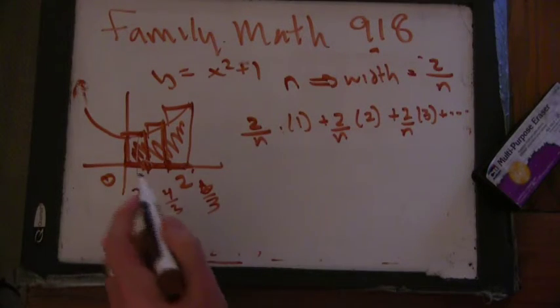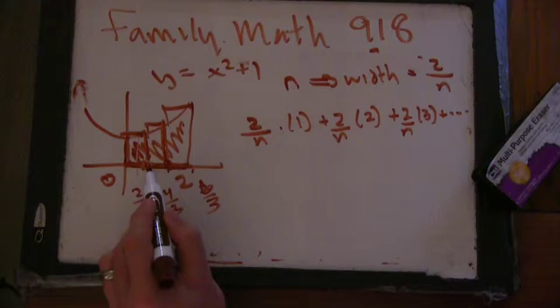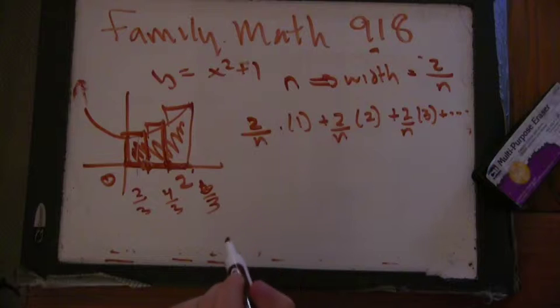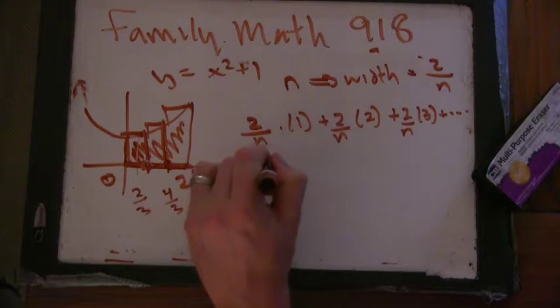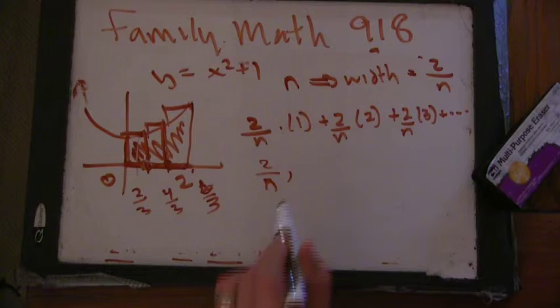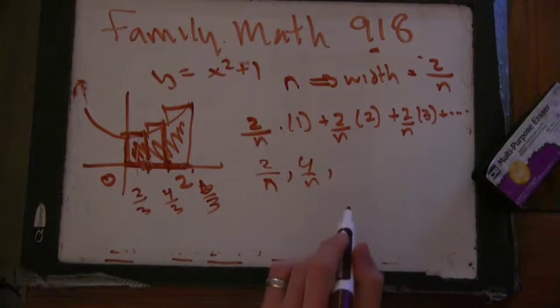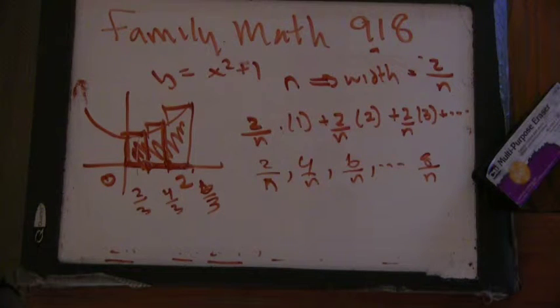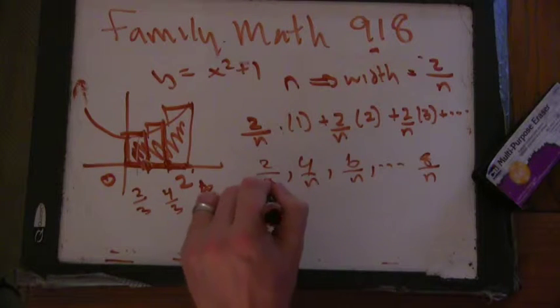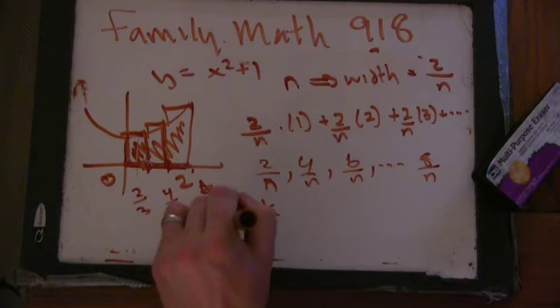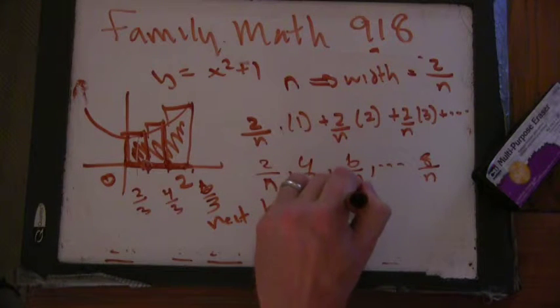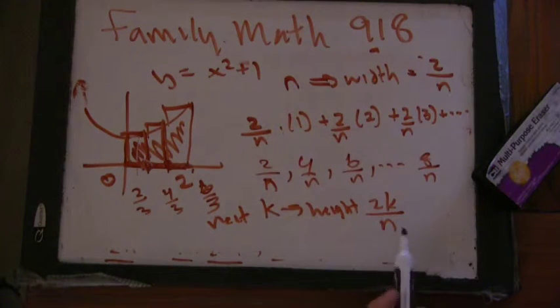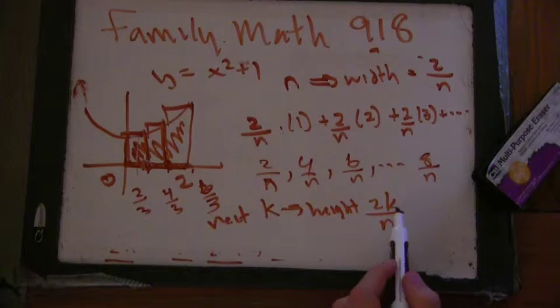And for n rectangles, where would my first step be? It would be two over n. That's right. The first step would be two over n. What would the second step be? Four over n. Four over n. Six over n, eight over n, so on, until you reach two n over n. Yeah, good job. So our rectangle k has a height of two k over n. So step one was two over n, and step two was four over n.